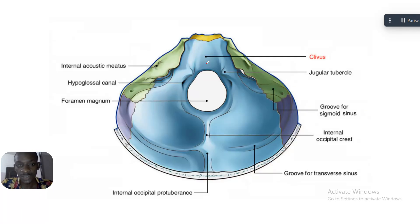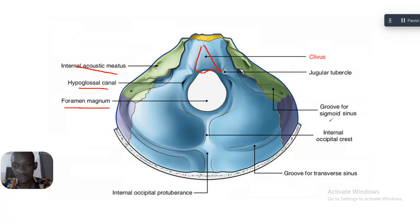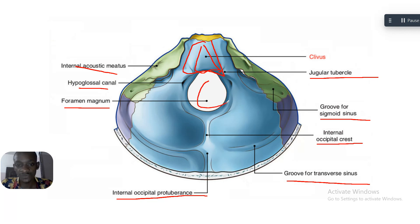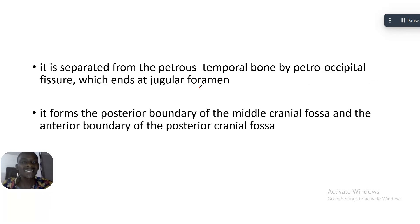Here is another image showing the clivus. You can see it is a sloping area. You can see the internal acoustic meatus, the hypoglossal canal, the foramen magnum, the groove for sigmoid sinus, the internal occipital crest, the groove for transverse sinus, the internal occipital protuberance, and the jugular tubercle. These are extra knowledge, but the key point is that the clivus is a sloping area in front of the foramen magnum.